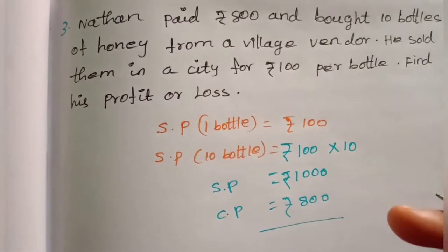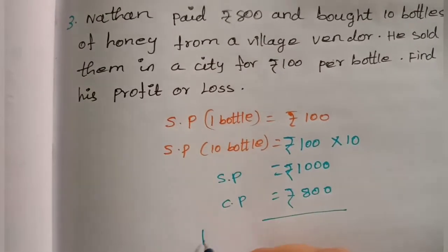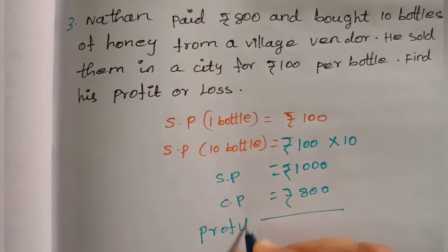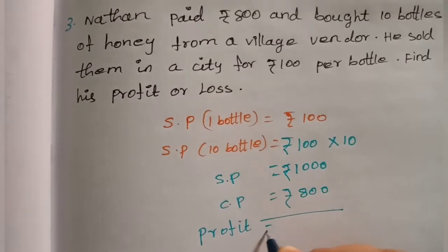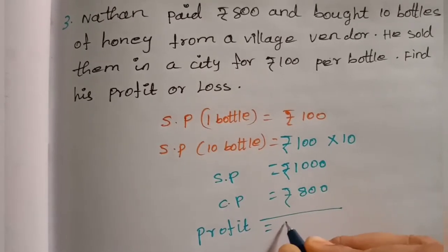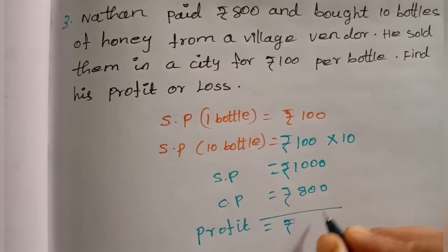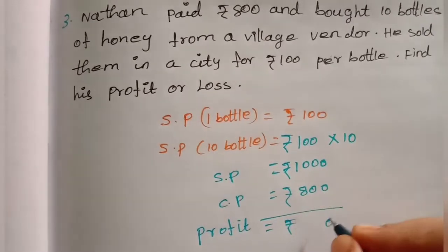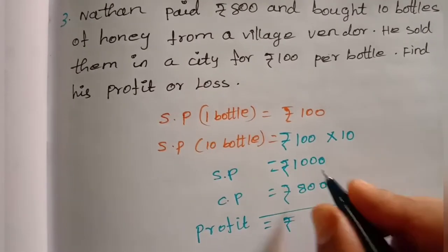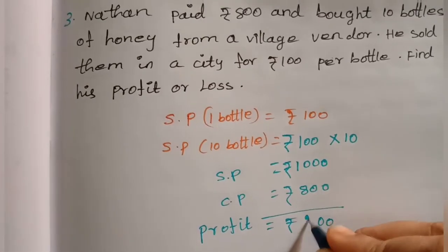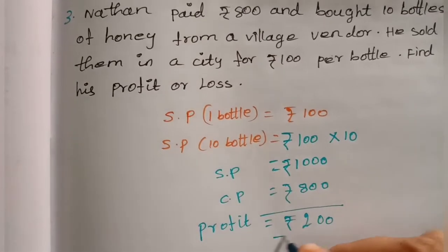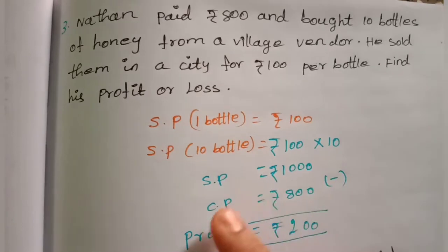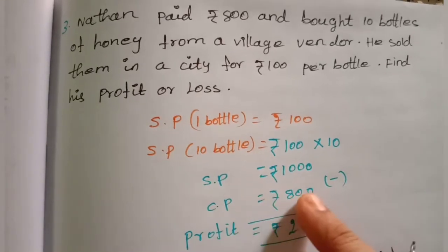Profit or loss: sales price is 1000 rupees and cost price is 800 rupees. Since selling price is greater than cost price, there is a profit of 200 rupees.